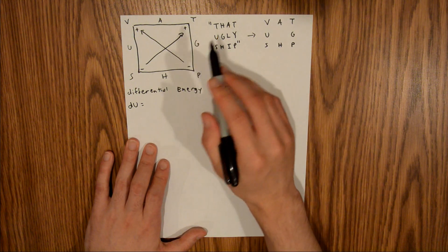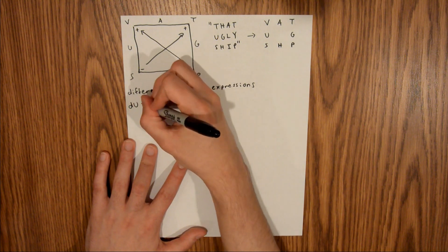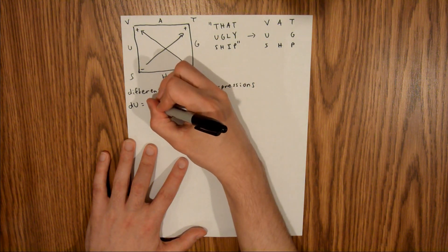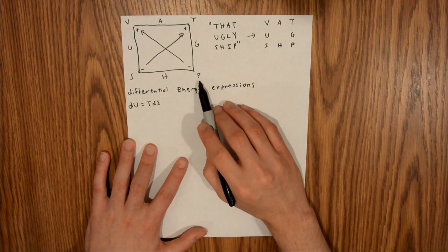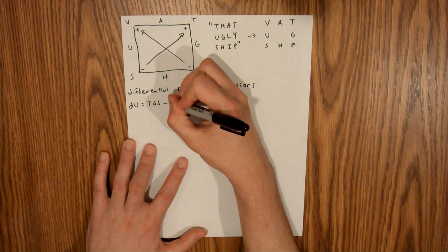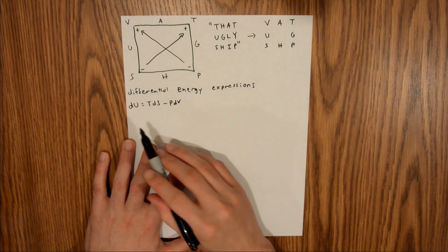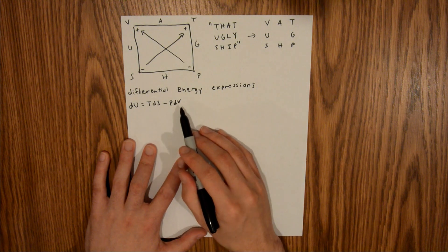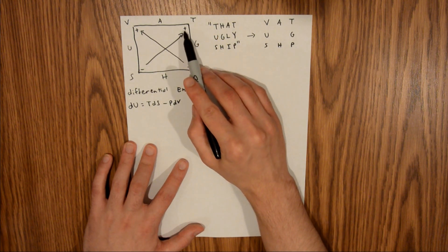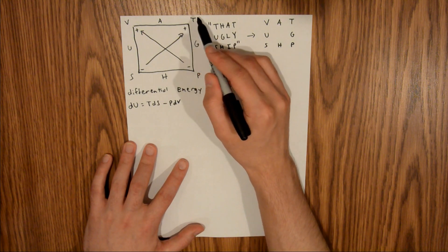You could start with P — it doesn't matter, you're going to have two terms anyways. Starting with T, you're going to have positive T, and then you follow the arrow down to S and have the derivative of S, so TdS. Then you start at the other non-natural variable — you have a minus sign here, so negative P — and then follow the arrow to V: dV. So dU = TdS − PdV. Note that the sign only matters where you start.